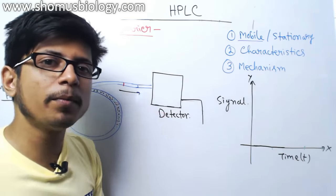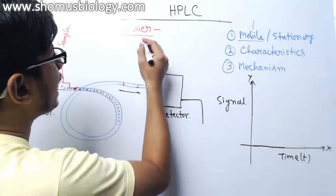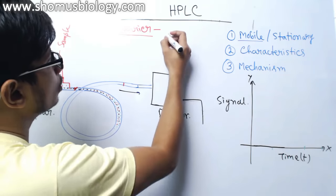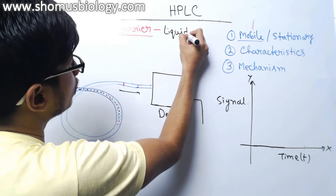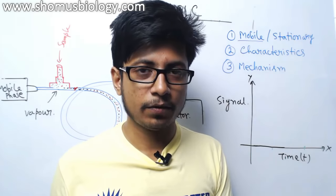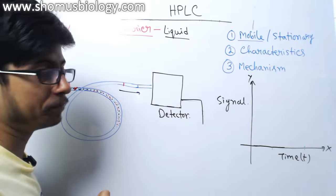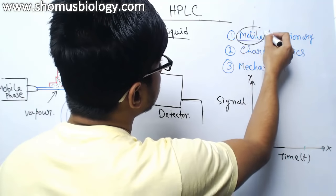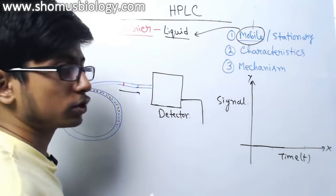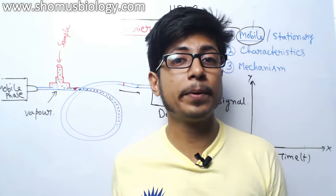In HPLC, or high performance liquid chromatography, this is a type of liquid chromatography. The carrier that actually brings all those sample molecules with it is a liquid. In gas chromatography, the carrier is a gas — for example, helium, hydrogen, or nitrogen — but in liquid chromatography, the carrier will be liquid, and the mobile phase mostly represents the phase that the carrier presents. So the mobile phase for HPLC is also liquid, because the liquid is carrying all the dissolved substances that we want to separate.